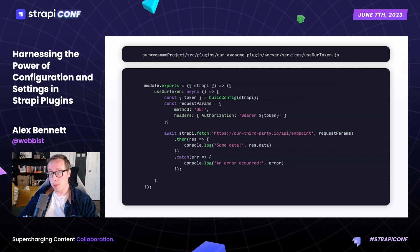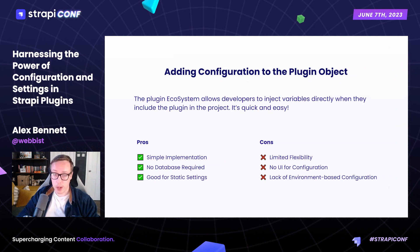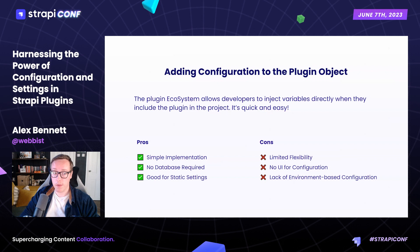To recap the pros and cons: the plugin ecosystem allows developers to inject variables directly when they include the plugin in the project. The pros are that it's easy to add and manage configurations within the plugin object, quick to implement, and requires no database operations — making it a lightweight solution great for static settings. The cons are that it's harder to update settings on the fly without modifying code and potentially redeploying, there's no user interface in the admin panel to configure the plugin, and it's less straightforward to handle different configurations for different environments.